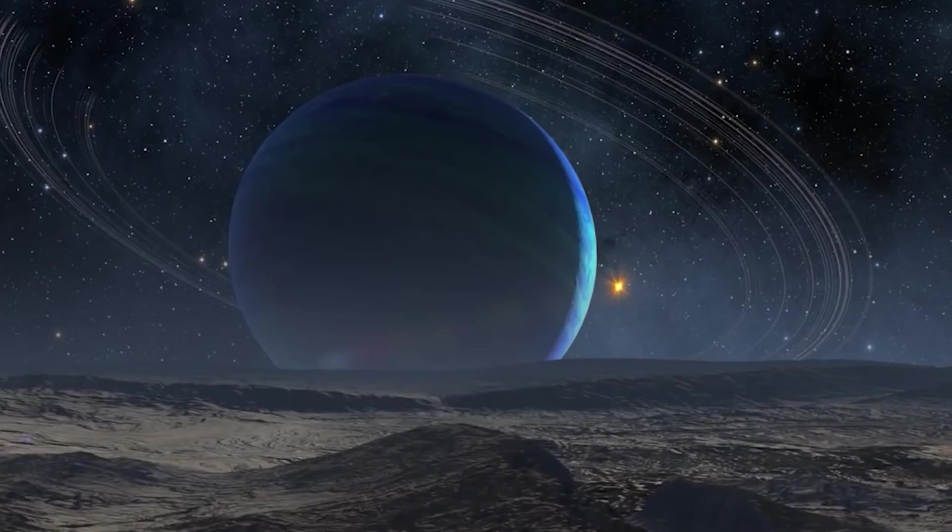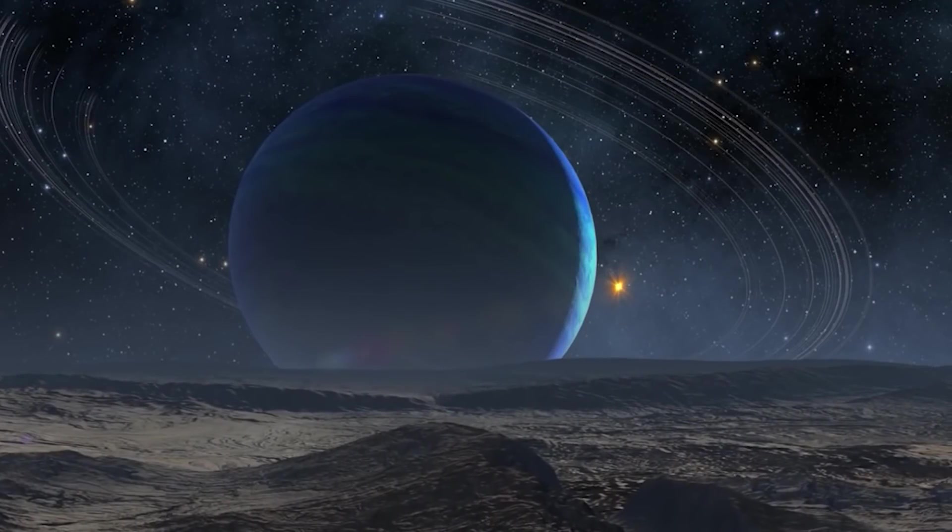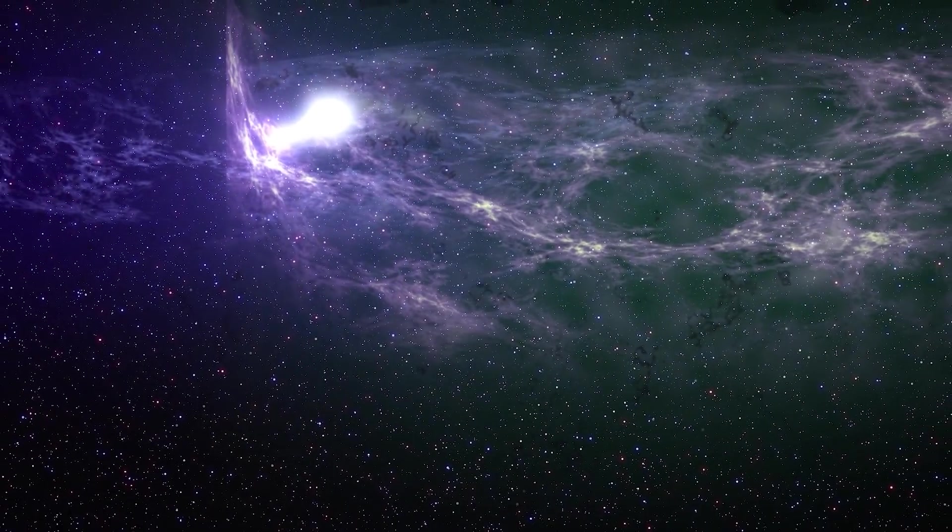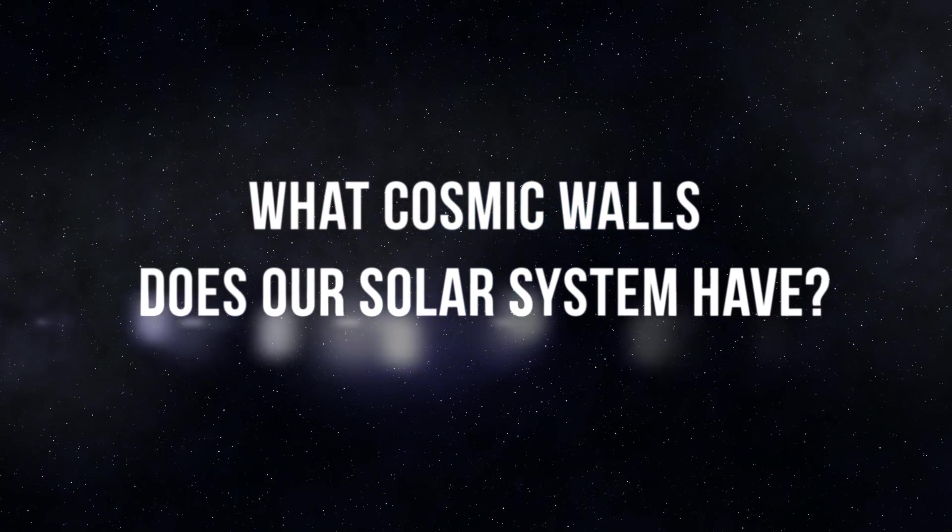In another 10 years, you'll enter the orbit of Neptune, the last planet. But you won't even get close to the cosmic wall of our solar system. So, where are its boundaries?